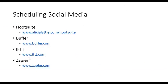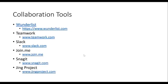So those were the scheduling and automation tools — HootSuite, Buffer, If This Then That, and Zapier. Now we're going to talk about collaboration tools. We've got Wunderlist, which is a great tool for to-do lists. Teamwork is a great tool, especially for client work and working with your outsource team. It's a great way to schedule tasks and keep everything in one centralized location.